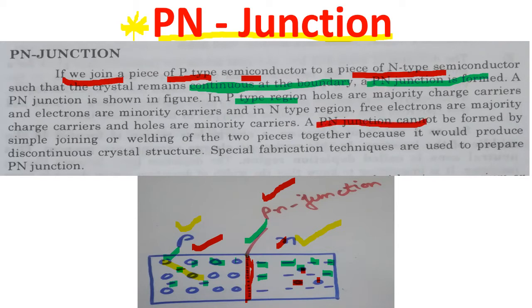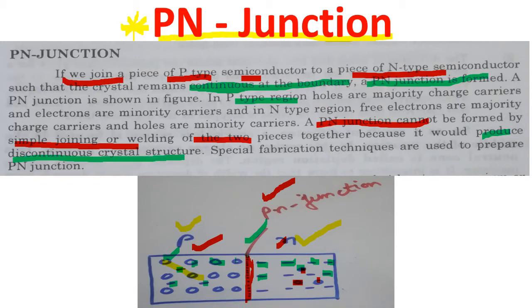Those holes present in N-type are minority charge carriers. A P-N junction cannot be formed by simply joining or welding two pieces together, as these are not two separate pieces. Actually, this is a single crystal of germanium or silicon doped such that one half is doped with pentavalent and the other half with trivalent impurity. Joining separate pieces would produce a discontinuous crystal. Special fabrication techniques are used to prepare a P-N junction, and the most important one is the melting process.